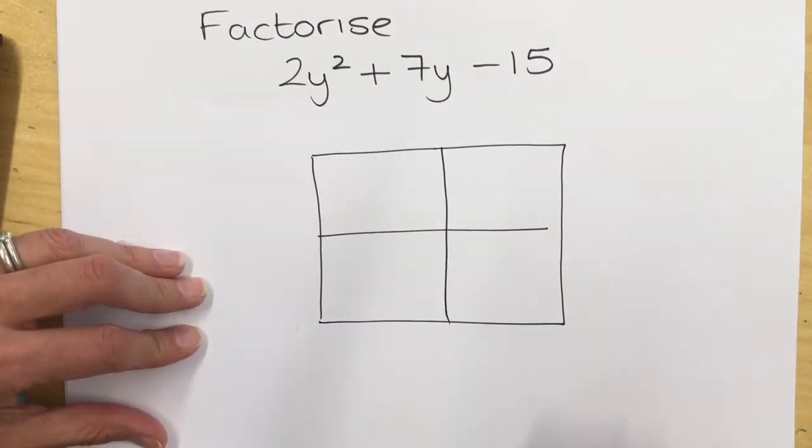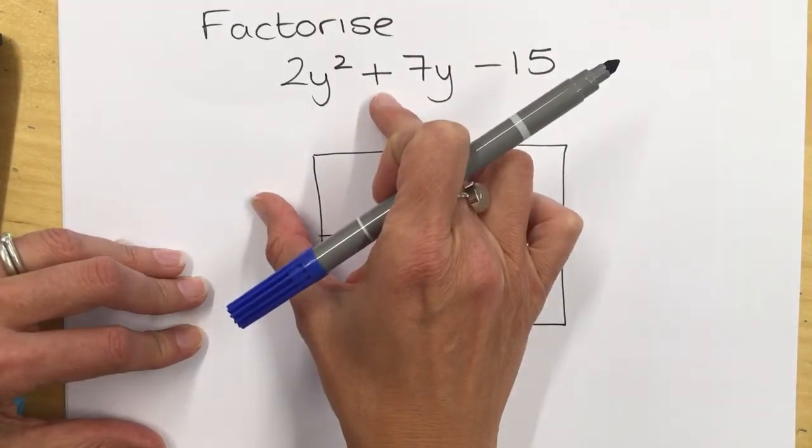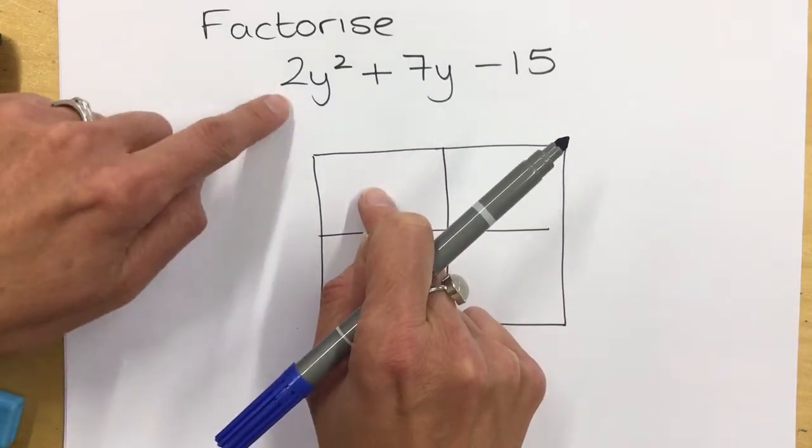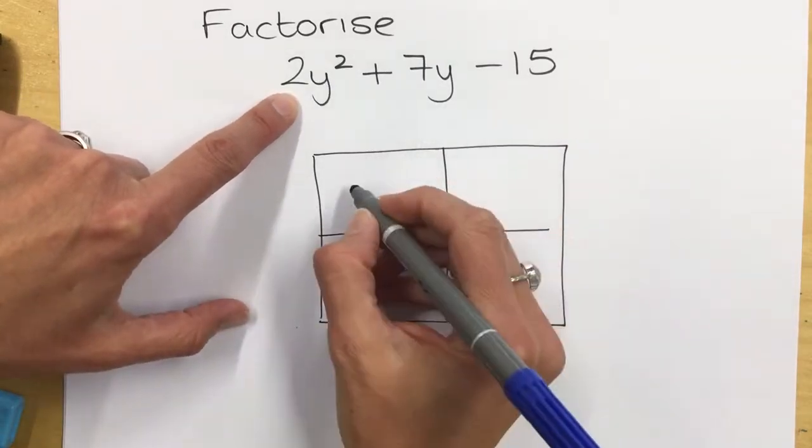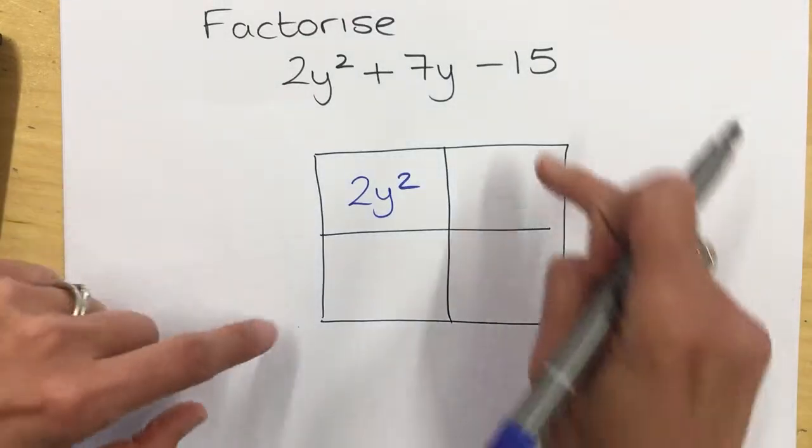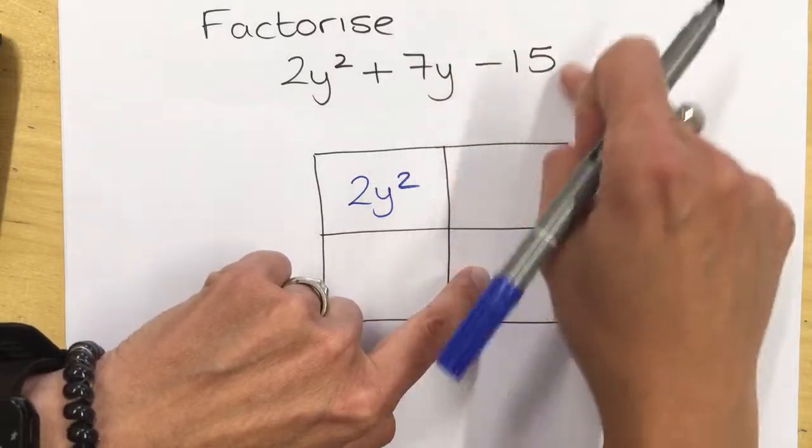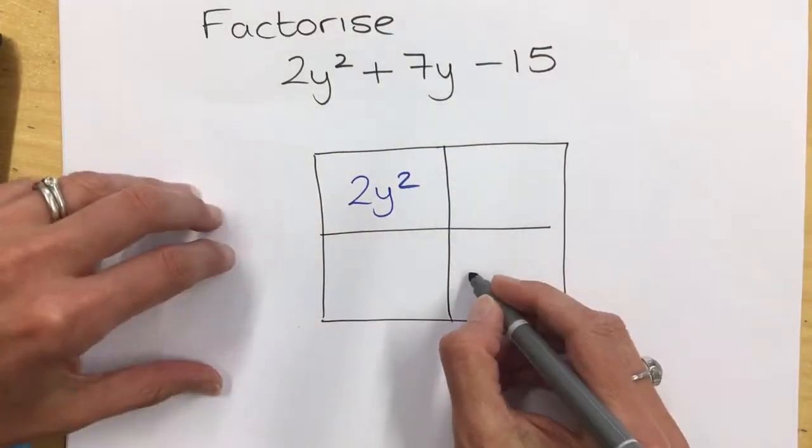When you use the grid to expand, what you find is that the two numbers here, when you multiply them, give you the value in here, which is the same as this value here. And then these two values here get multiplied together to give you the value here, which relates to the constant value.